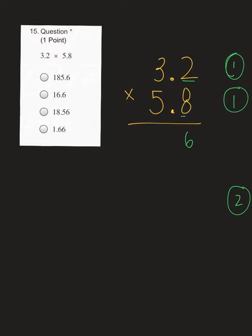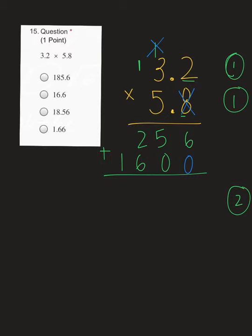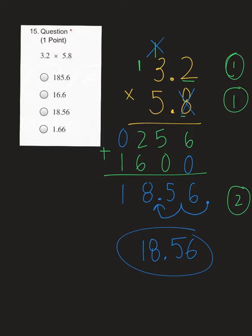Now we can multiply. 8 times 2 is 16 — put a 6, carry a 1. 8 times 3 is 24, plus 1 is 25. Now we tic-tac-toe: tic the 1, tac the 8, toe the 0. 5 times 2 is 10 — put our 0, carry a 1. 5 times 3 is 15, plus 1 we get 16. Add your products — we need a placeholder above that 1 before we add. 6 plus 0 is 6. 5 plus 0 is 5. 2 plus 6 is 8. 0 plus 1 is 1. We said we needed to move our decimal point two places — final answer should be 18.56, which was C on your form.